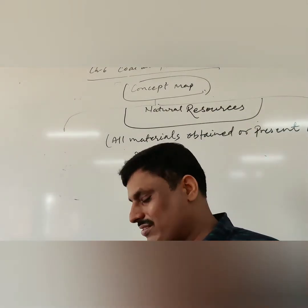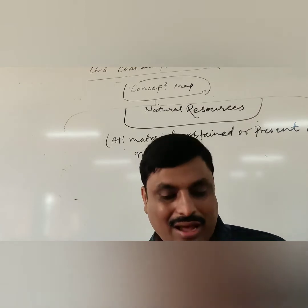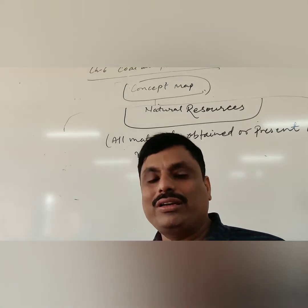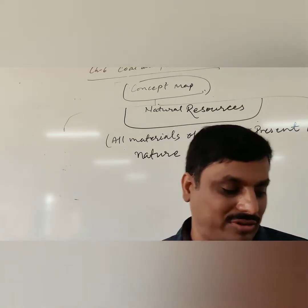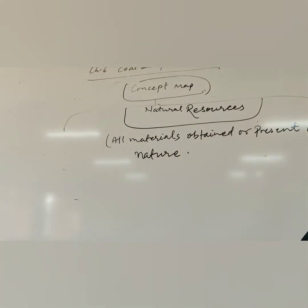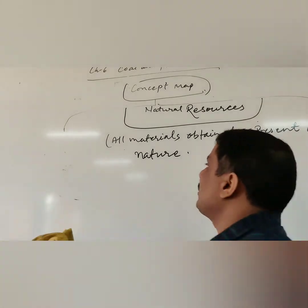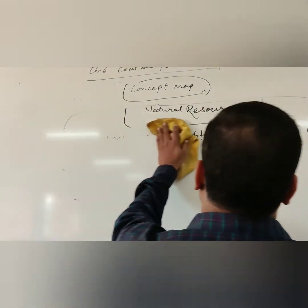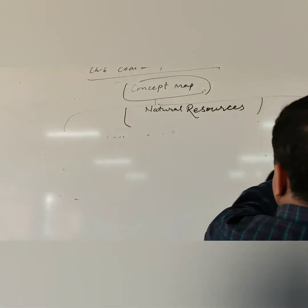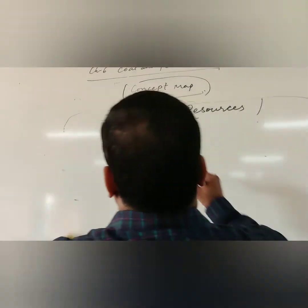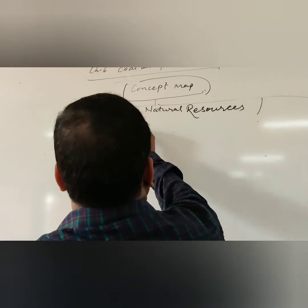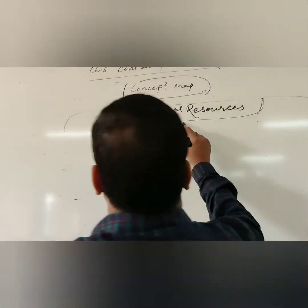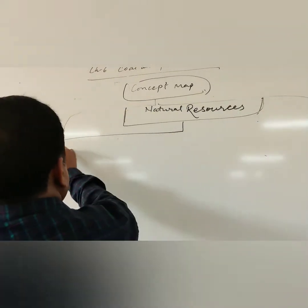Natural Resources are categorized into three different types. One by one, we will come to know about all these three different types. Let us start with the different types of Natural Resources.